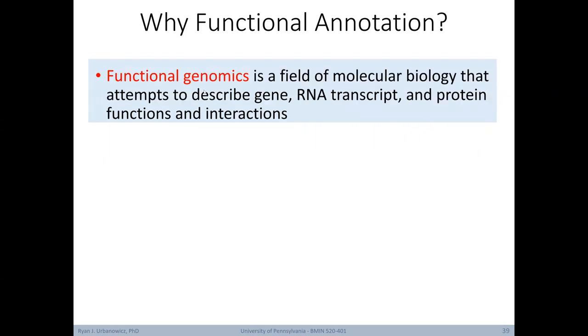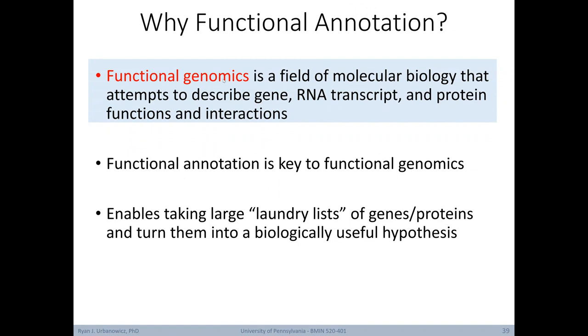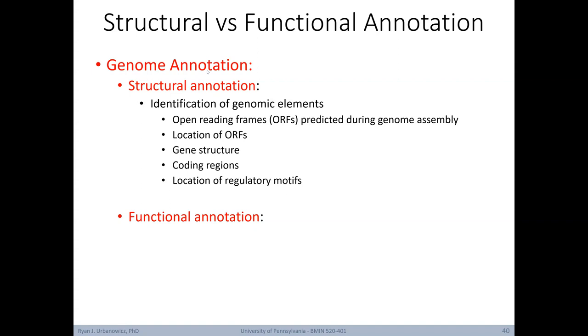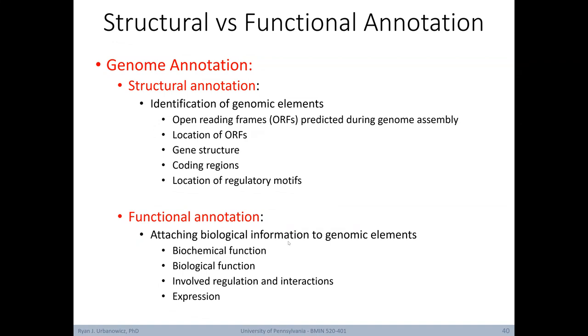So why again do we care about functional annotation? Well, first off, the term functional genomics is a field of molecular biology that attempts to describe gene, RNA transcript, and protein functions and interactions. Functional annotation plays a key role in functional genomics. It basically allows us to take a large laundry list of genes or proteins and turn them into biologically useful hypotheses. The broader term gene annotation includes both functional annotation and structural annotation. Structural annotation focuses on the identification of genomic elements, for example open reading frames, gene structures, coding regions, and the location of regulatory motifs. In contrast, functional annotation aims at attaching biological information to genomic elements. This includes biochemical function, biological function, whether it's involved in regulation and interactions, and its expression.